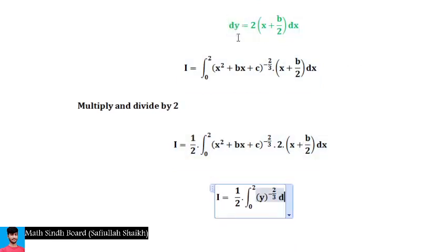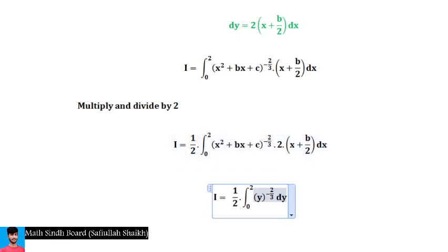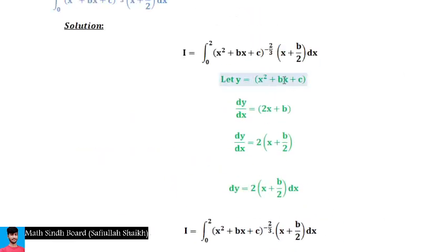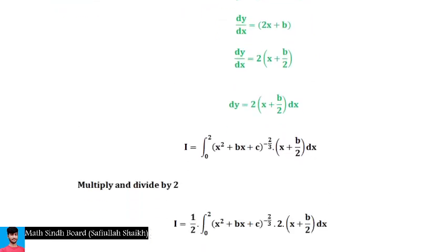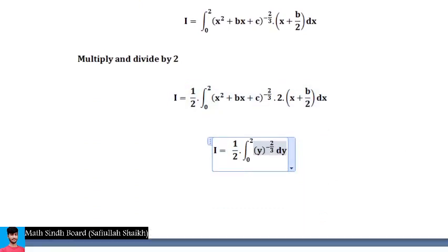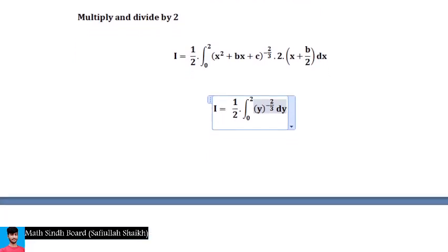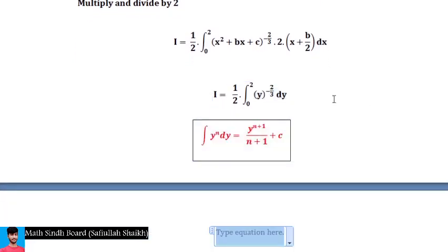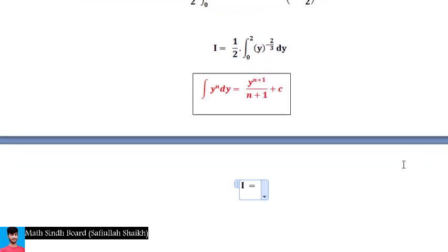Now we substitute: x² + bx + c = y and 2·(x + b/2)·dx = dy. The integral becomes (1/2)·∫ y^(-2/3) dy. We know the antiderivative of y^n is y^(n+1)/(n+1) + C, so we can now easily find the antiderivative of y^(-2/3).